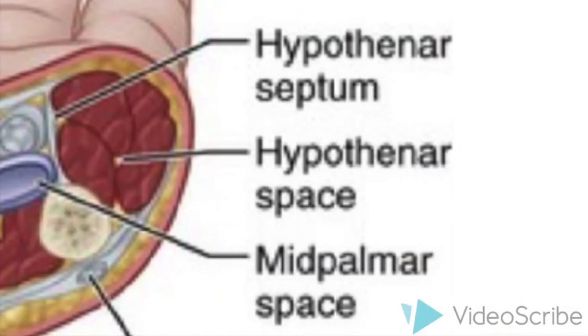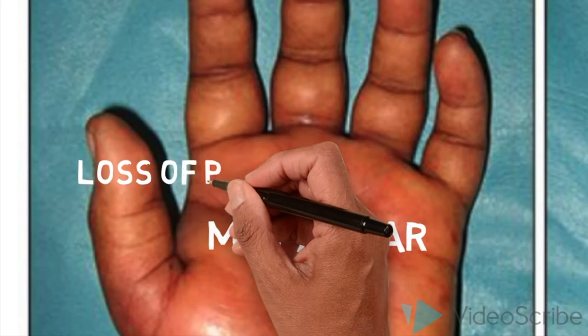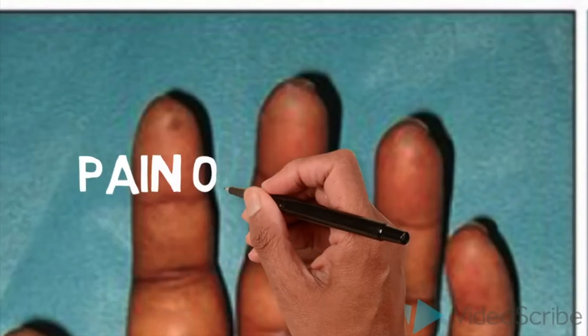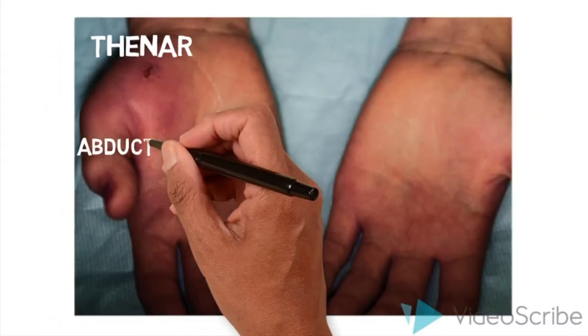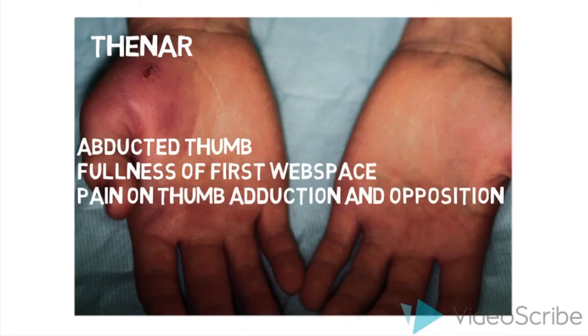These include the thenar, the hypothenar, and mid-palmar spaces. Mid-palmar symptoms include loss of palmar concavity, the long and ring finger may be in a partially flexed posture, or there may be pain on passive extension. The thenar symptoms include an abducted thumb, fullness of the dorsum of the first web space, and pain on abduction and opposition of the thumb.